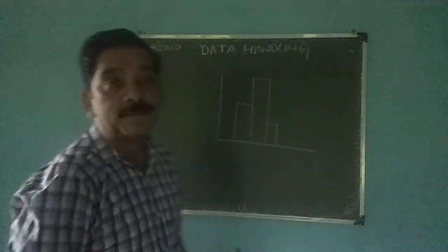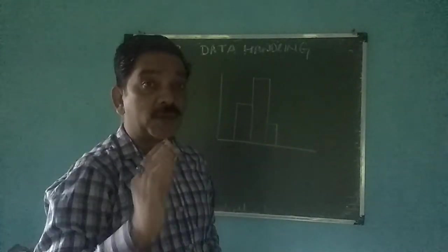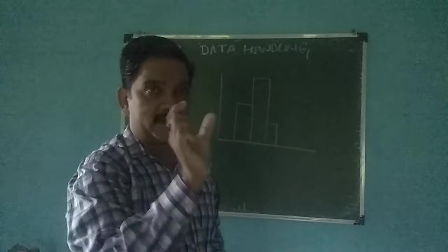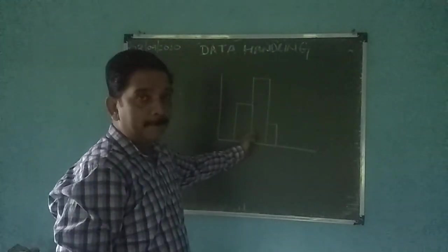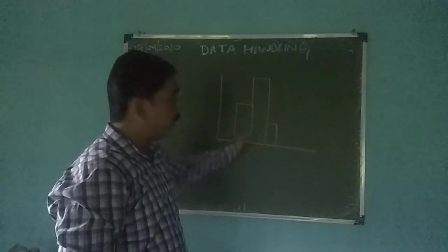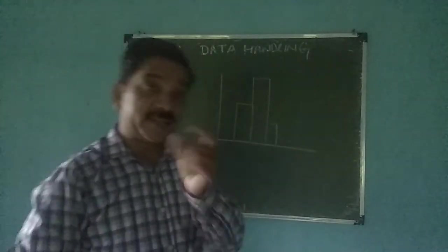This is called histogram. Now what is bar? As a name suggests, bar separate. Now if you see in this figure there is no gap. There is no gap, but in bar graph gap is there.